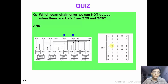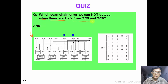However, the X-compactor cannot tolerate more than a specific number of X values. In this case the X-compactor only tolerates one single X. When we have two X values coming out from scan chains 5 and 6 at the same time, the X-compactor does not work. Please tell me which scan chain errors we cannot detect when we have unknowns from scan chains 5 and 6.